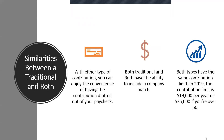Some similarities between a traditional account and a Roth: no matter which type of contribution you are doing, you enjoy the convenience of having that contribution drafted directly out of your paycheck. Both traditional and Roth include the company match. When the company provides a match, that's always going to be traditional because the company cannot pay your taxes for you. Both types have the same contribution limits — for 2019, that limit is $19,000, and if you're over 50, you have an additional $6,000.